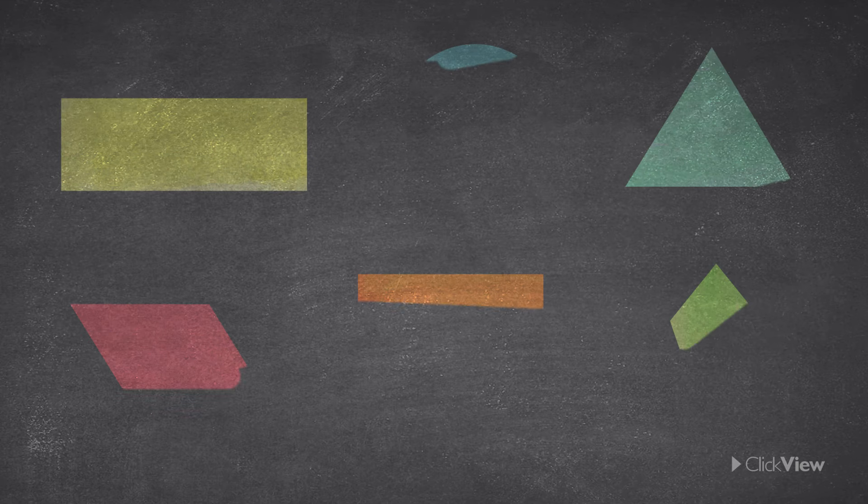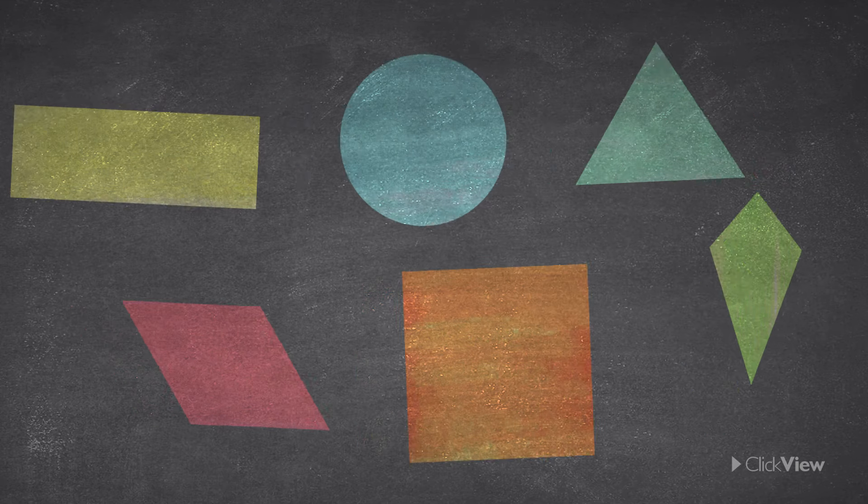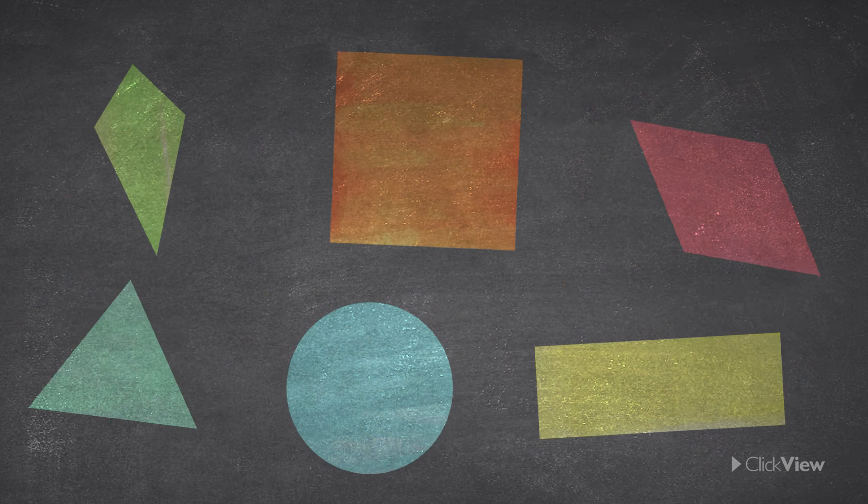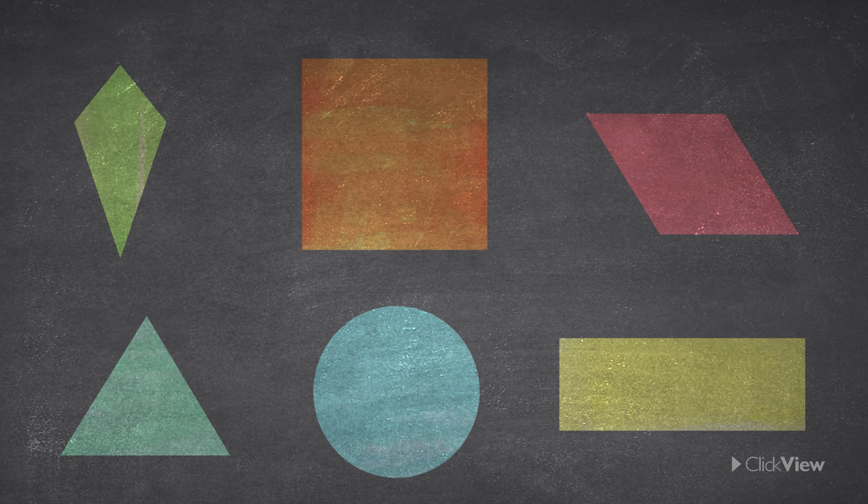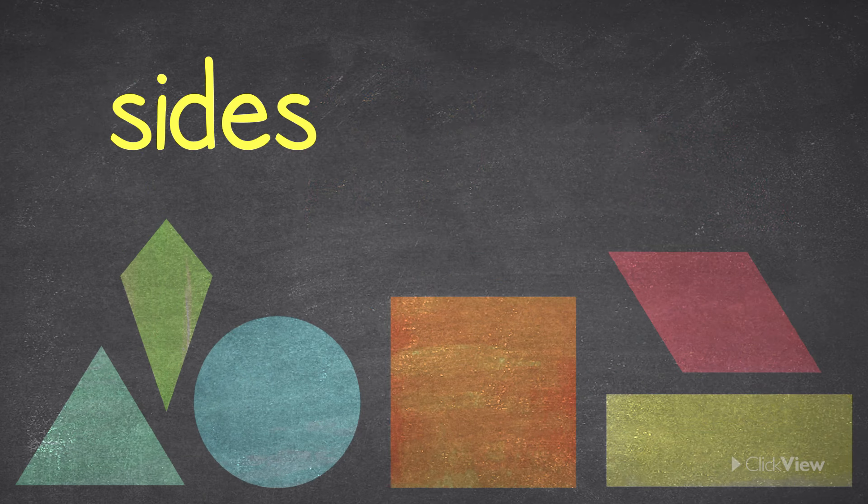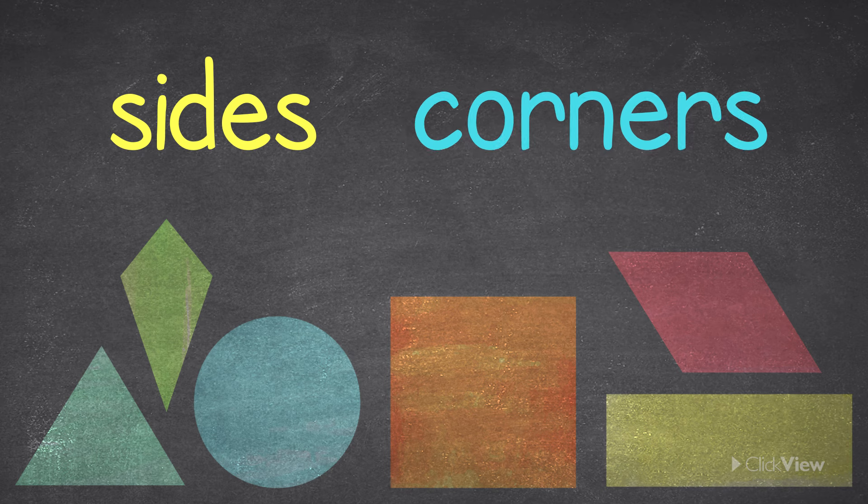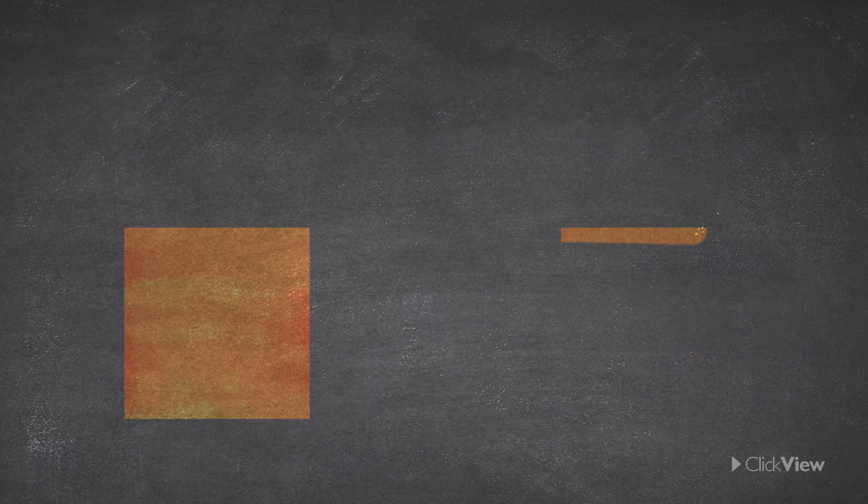Shapes have certain features that help us work out exactly what type of shape they are. These features include sides and corners. We get different kinds of shapes depending on how many sides and corners they have. But what are sides and corners?